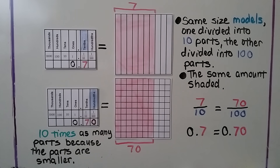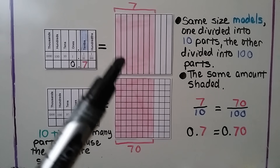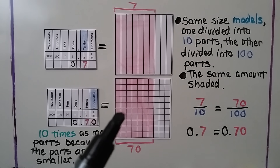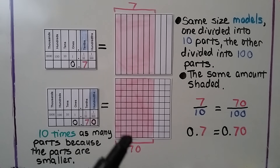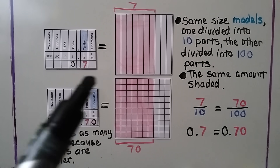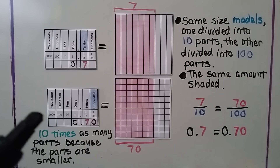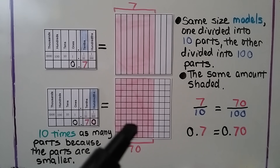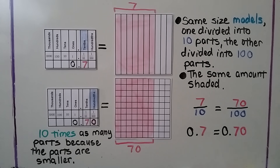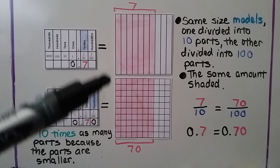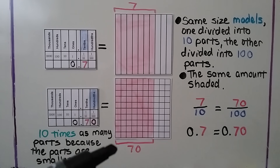Here we have same-size models: one divided into 10 parts and the other divided into 100 parts, and the same amount is shaded. This one is 7 tenths, because it's split into 10 equal parts, and this one is 70 one-hundredths — it's 10 times as many parts because the parts are smaller. We can see that one bar in the first model was split into 10 parts. Seven tenths is equal to 70 hundredths.